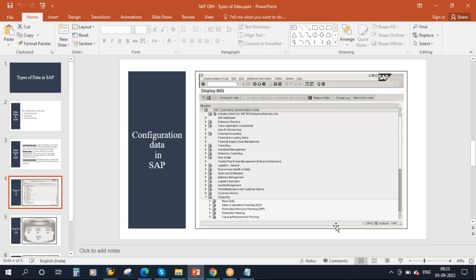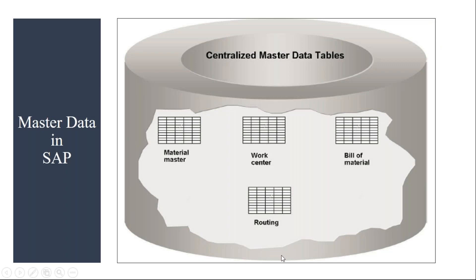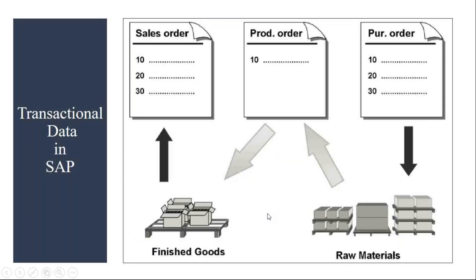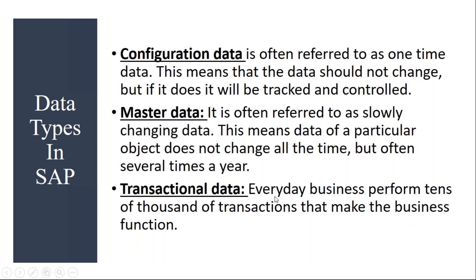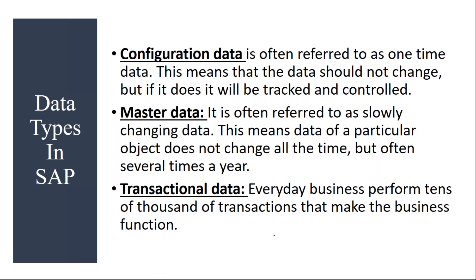So that's how the master data is used. We discussed the configuration data, then the master data with different master data in different modules. The last one is the transactional data. Transactional data is every day business data — every day the business performs tens of thousands of transactions that make the business function. Transactional data is like day-to-day business data. In the QM module, we have inspection lots.